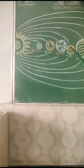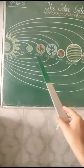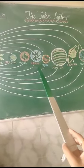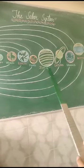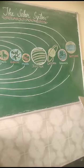Mercury, Venus, Earth, Mars, Jupiter, Saturn, Uranus, and Neptune.